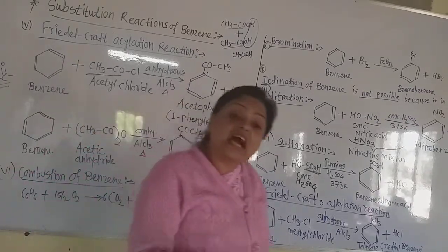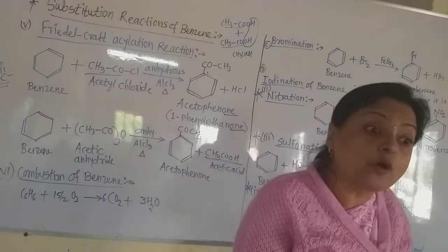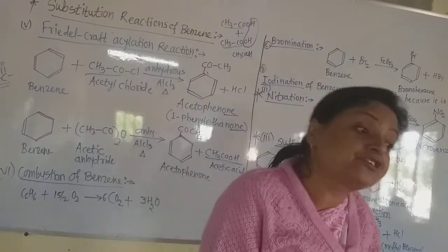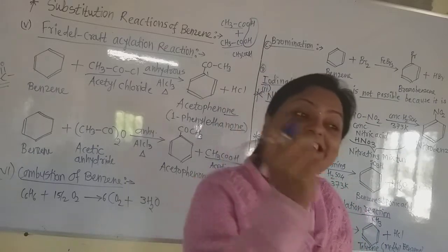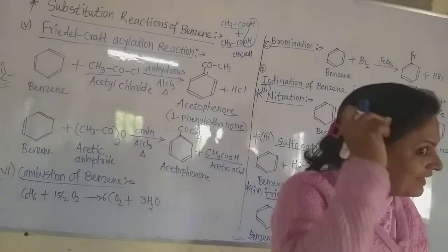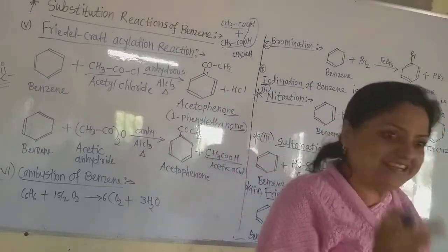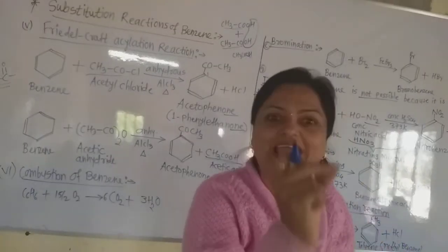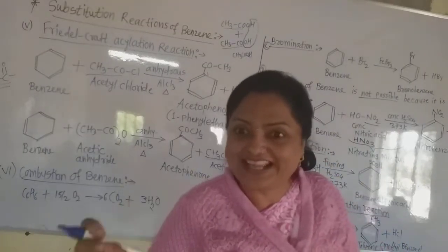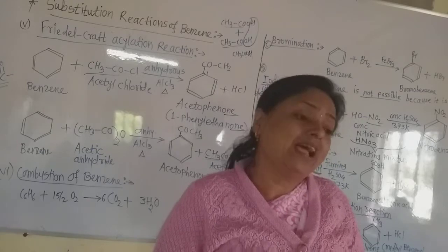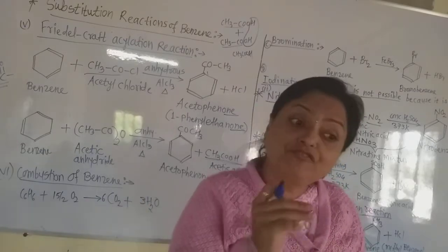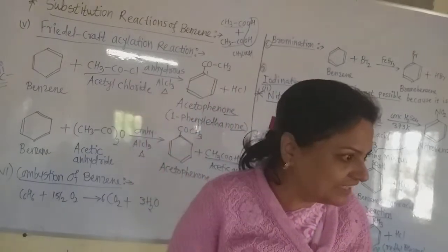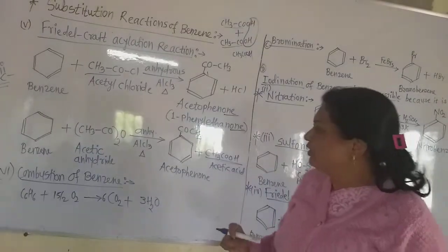Which question they ask in the examination — whether the action of acetic anhydride on benzene or the action of acetyl chloride on benzene — depends on which reaction you write. You will get full two marks if you give a well-balanced chemical reaction with nomenclature, names, byproducts, and the reagents written on the arrow.